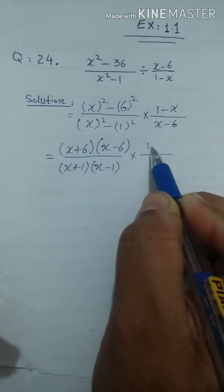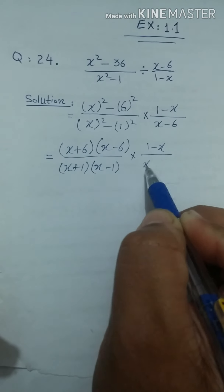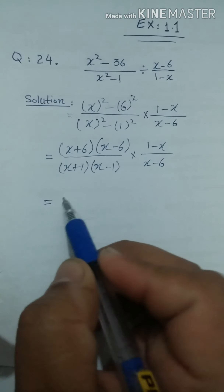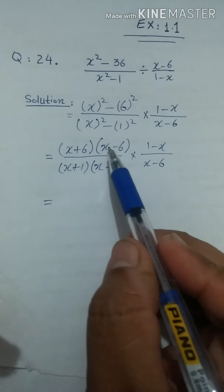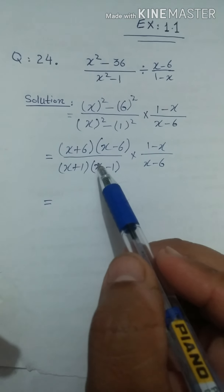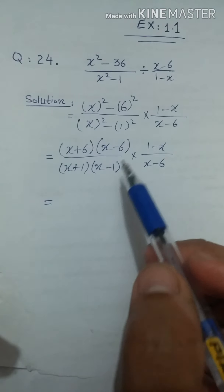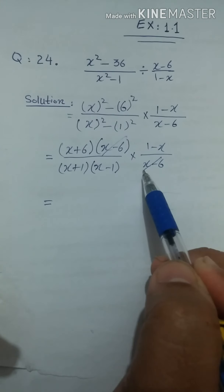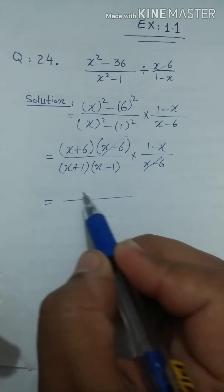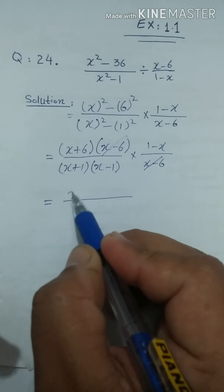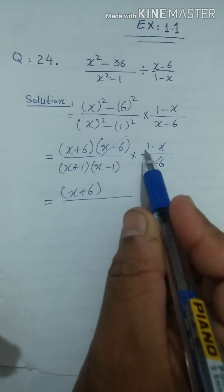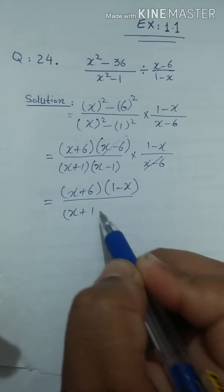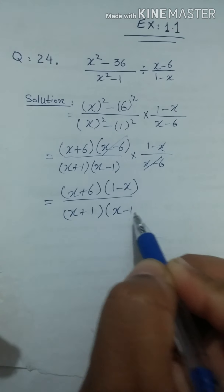Multiply by (1 minus x) over (x minus 6)। अब चूंकि ये चीज़ें multiply हो रही हैं, तो ऊपर और नीचे जो same terms हैं वो cancel हो सकते हैं। जैसे कि x minus 6 यहाँ भी है और यहाँ भी — ये दोनों cancel हो जाएंगे। बाकी बचा: (x+6)(1-x) ऊपर और (x+1)(x-1) नीचे।